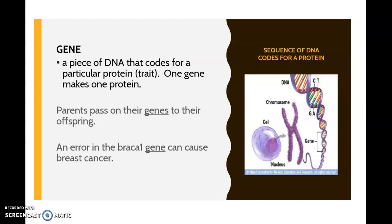These traits are written as information in our DNA. A specific sequence of information that codes for a trait is known as a gene. A gene is a piece of DNA that codes for a particular protein that is expressed as a characteristic or trait — one gene makes one protein. Parents pass on their genes to their offspring. For example, an error in the BRCA1 gene can cause breast cancer. The name BRCA1 stands for BReast CAncerr 1, and this is a gene that's been identified to cause breast cancer.